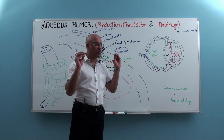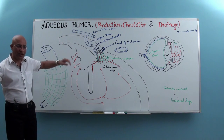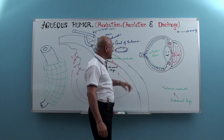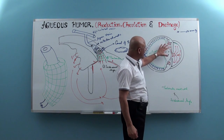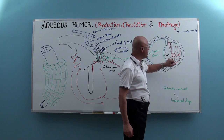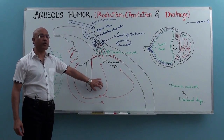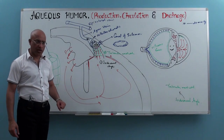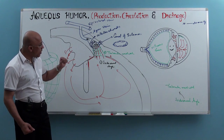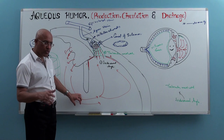Aqueous humor is produced by ciliary processes of the ciliary body, actively secreted by epithelium, released into the posterior chamber, and through the pupil comes into the anterior chamber. This provides nutrition to the lens and cornea, removes waste products, and maintains appropriate pressure. It continuously circulates and drains at the iridocorneal junction through the trabecular meshwork into the canal of Schlemm, then into collector channels and aqueous veins, then into episcleral veins, and ultimately mixes into systemic circulation.